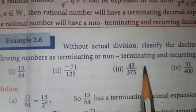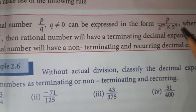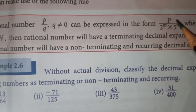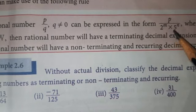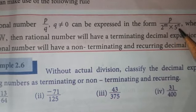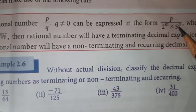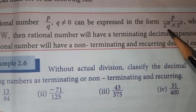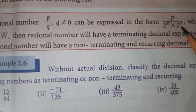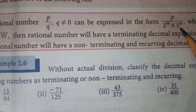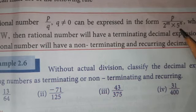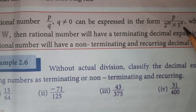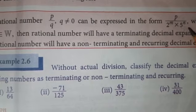For this method, we have one formula: p divided by 2 power m into 5 power n. If the denominator is in this format, that is called a terminating decimal expansion. If the format is not like this, that is non-terminating and recurring.